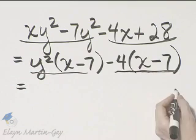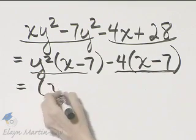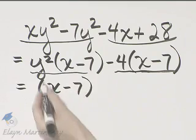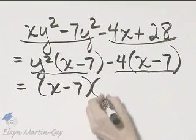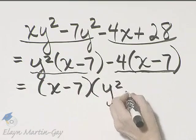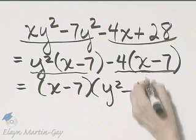Now look at these two terms. Notice there's a common factor of x minus seven. If I factor it from this term, I have y squared minus, if I factor it here, four.